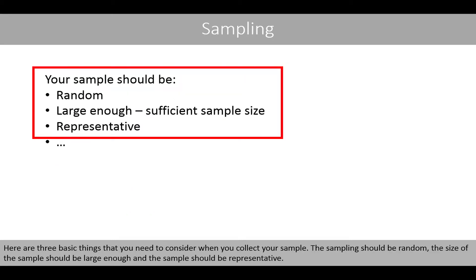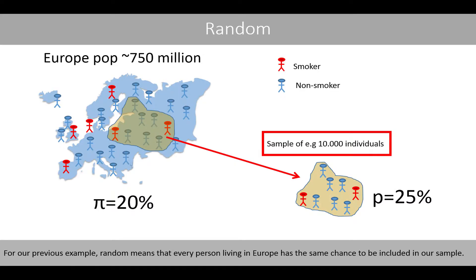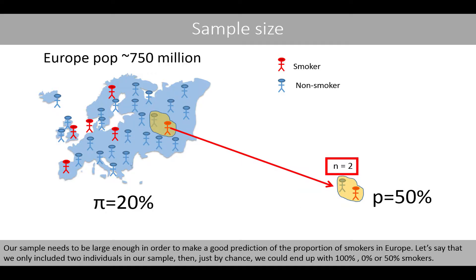Here are three basic things that you need to consider when you collect your sample. The sampling should be random, the size of the sample should be large enough, and the sample should be representative. Note that there are a lot more things that you need to consider, which depends on your experimental design. For our previous example, random means that every person living in Europe has the same chance to be included in our sample. Our sample needs to be large enough in order to make a good prediction of the proportion of smokers in Europe.